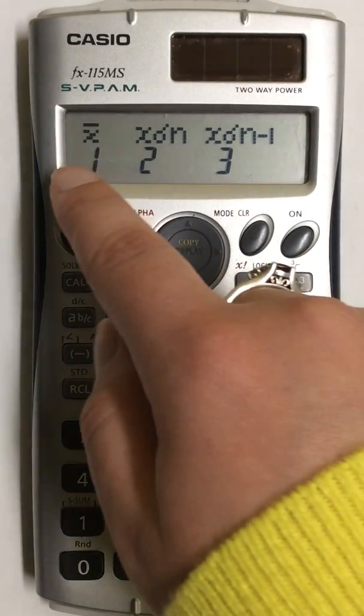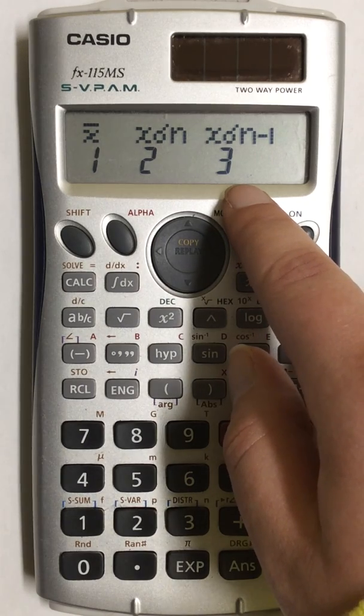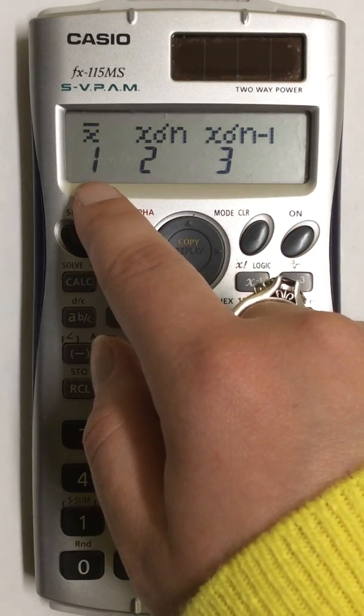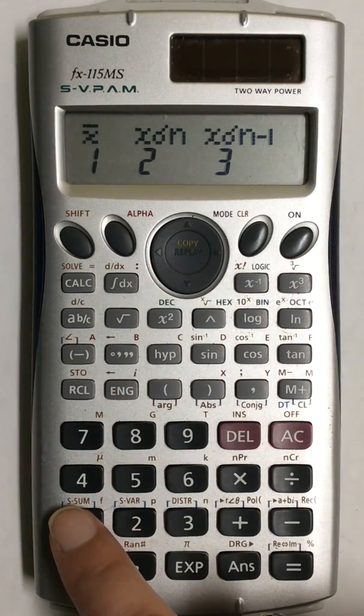Now I have three different options on my keypad, but the one that I need to find the mean is the first option, X bar. So I come down to my keypad and I press number 1.